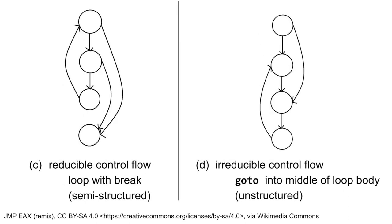Now consider these next two graphs. Graph C is still reducible control flow — it corresponds to a loop containing a break, and this is semi-structured control flow. But graph D is irreducible control flow. You can see that the bottom three nodes form a loop, but that loop is not single entry, because the first node can transfer control either to the head of the loop or into the middle of the loop body.